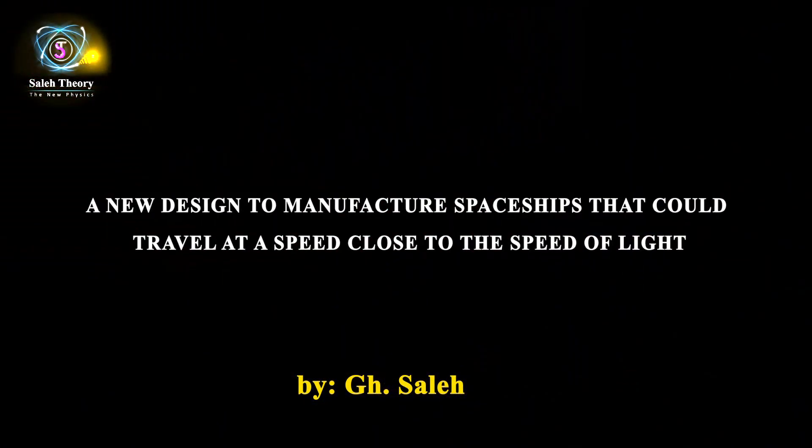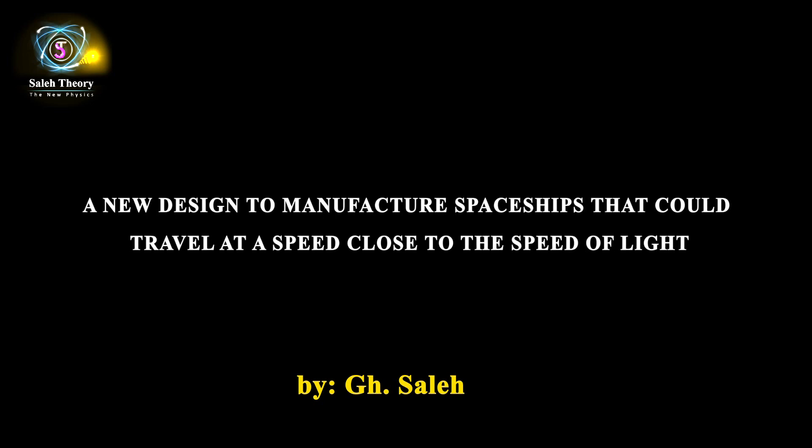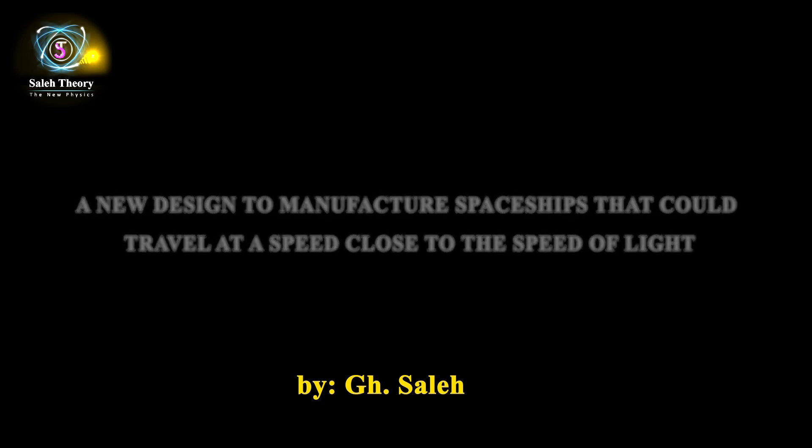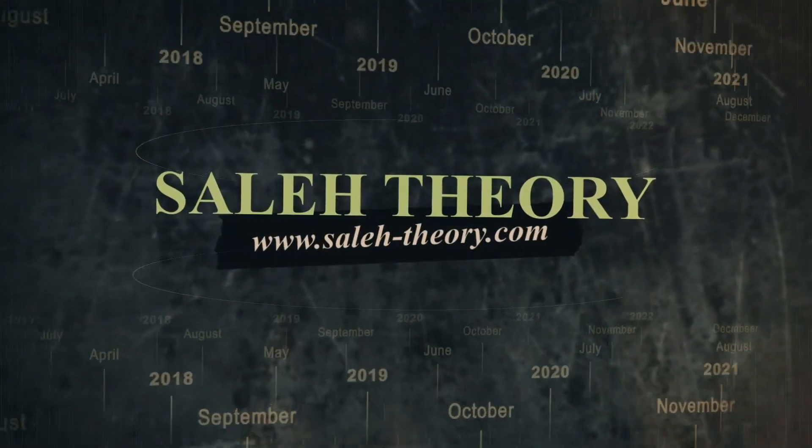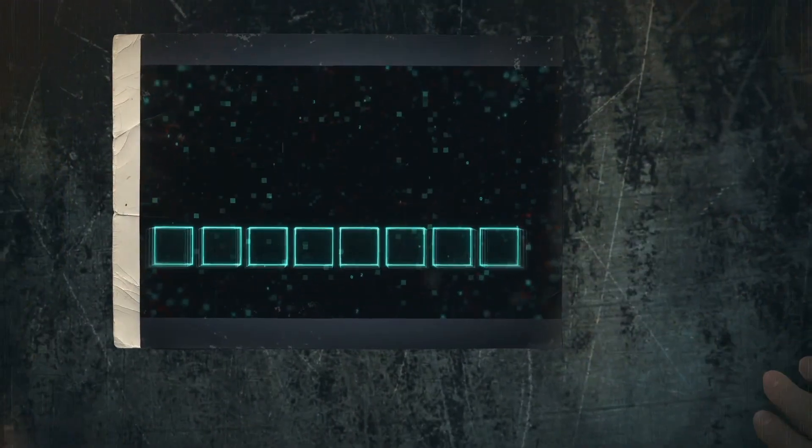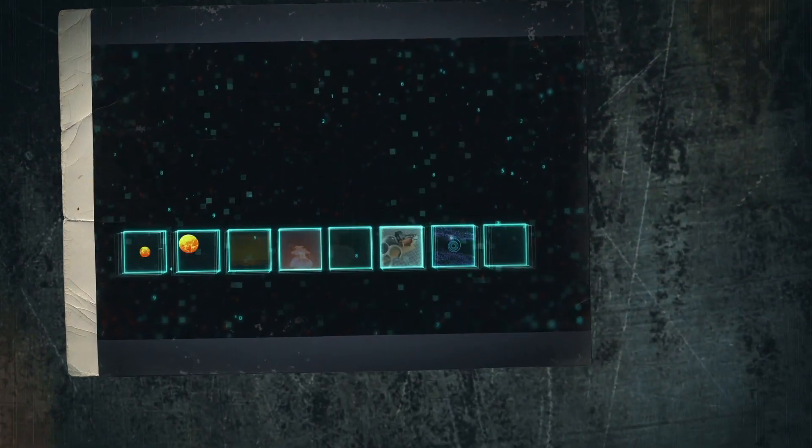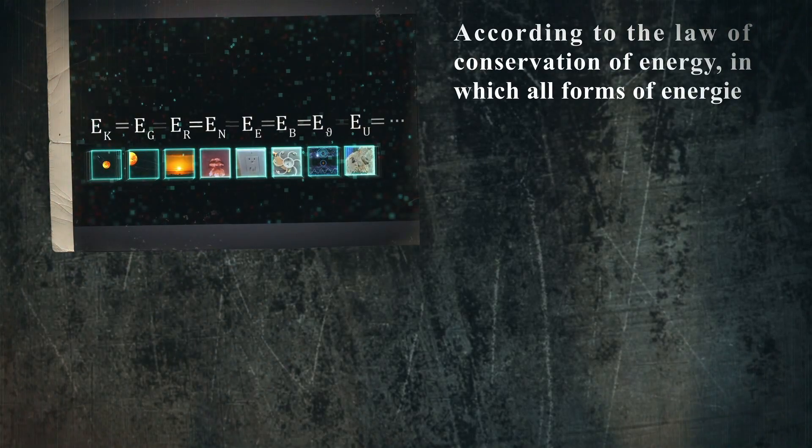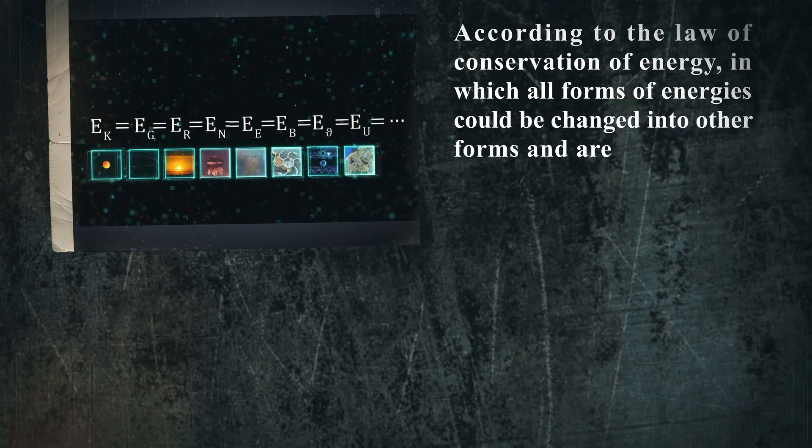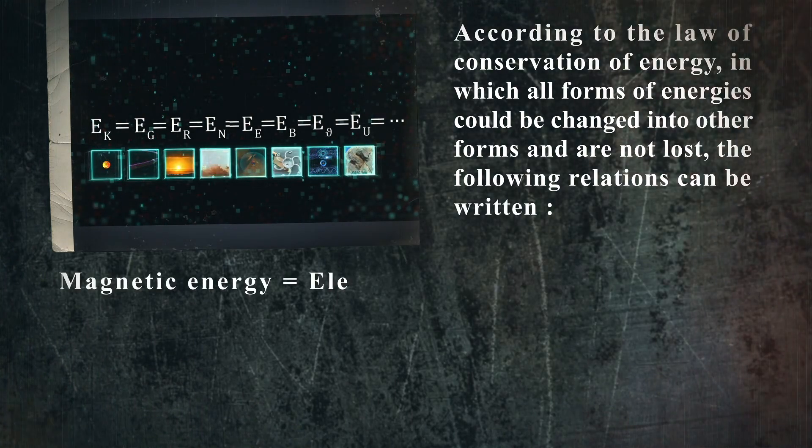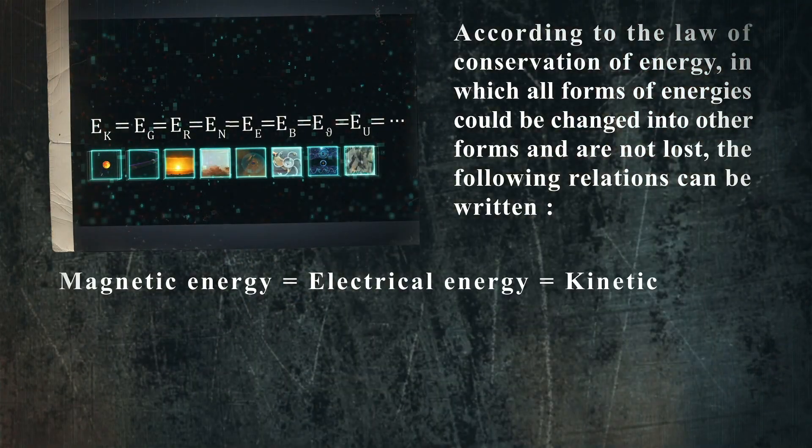A new design to manufacture spaceships that could travel at a speed close to the speed of light. According to the law of conservation of energy, in which all forms of energies could be changed into other forms and are not lost, the following relations can be written.